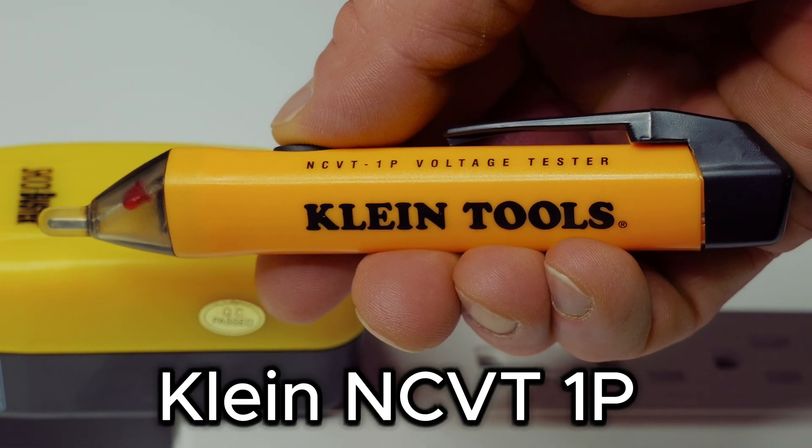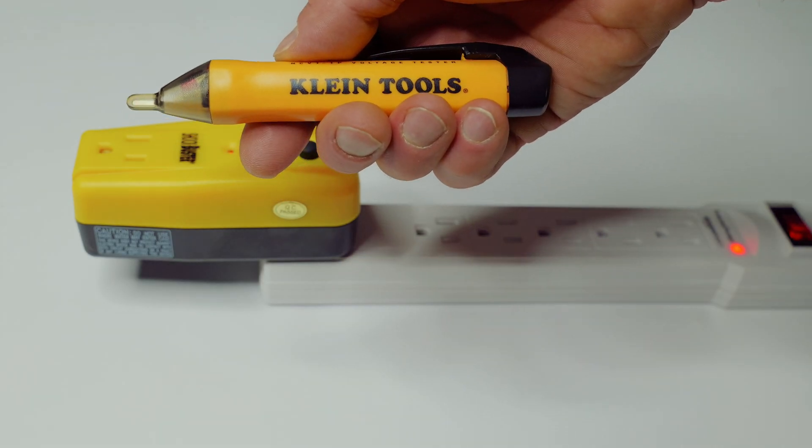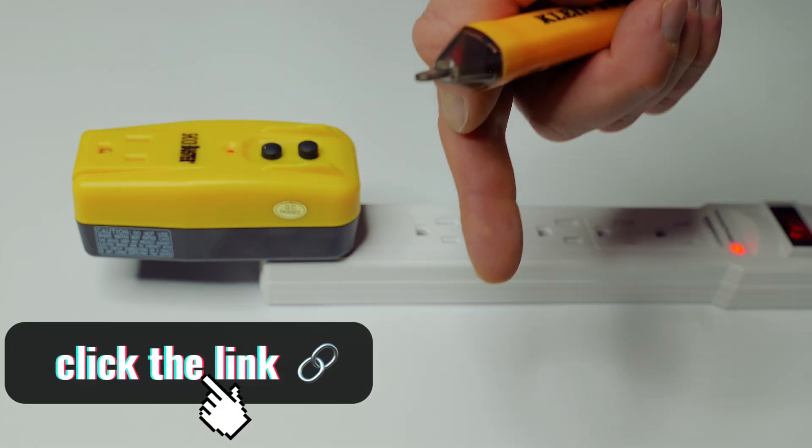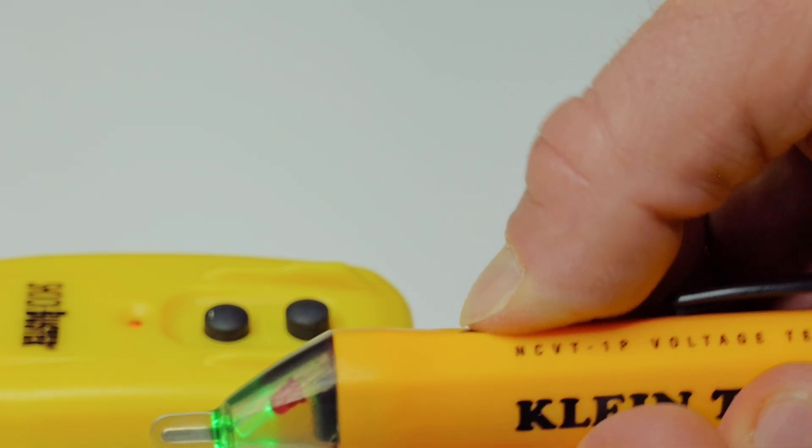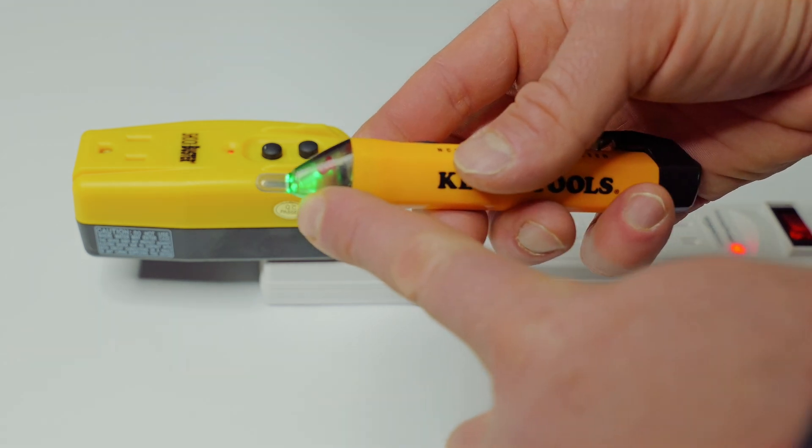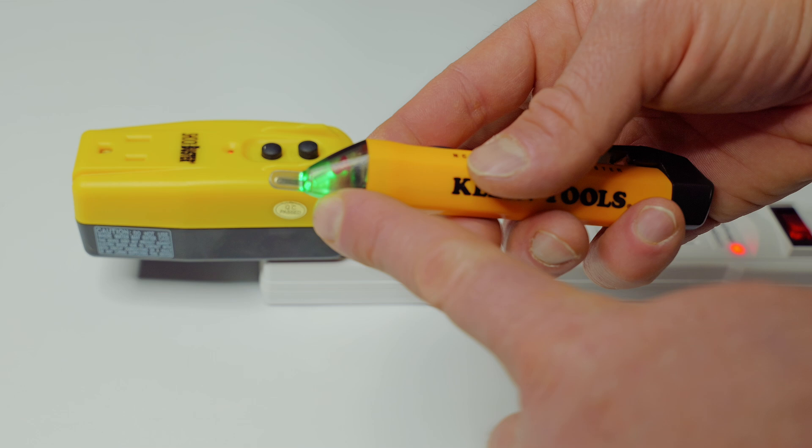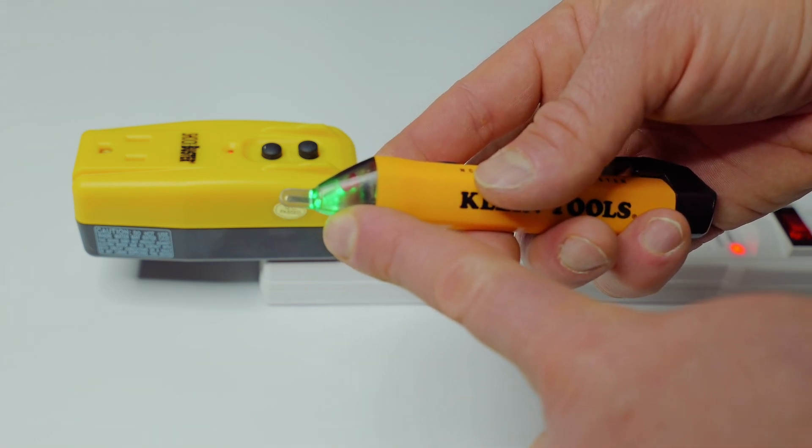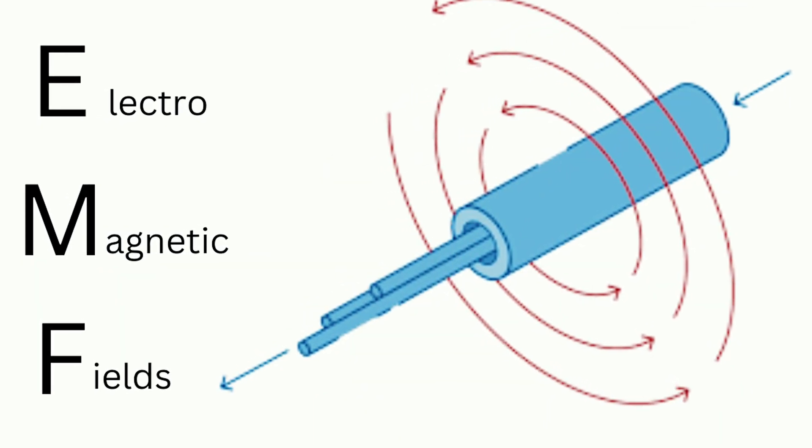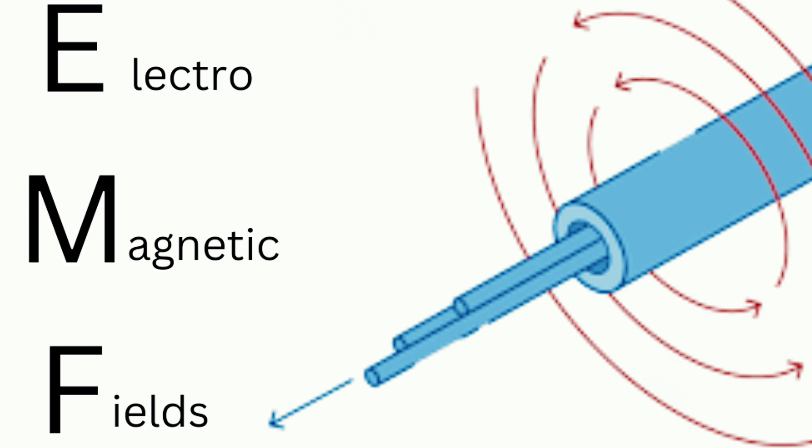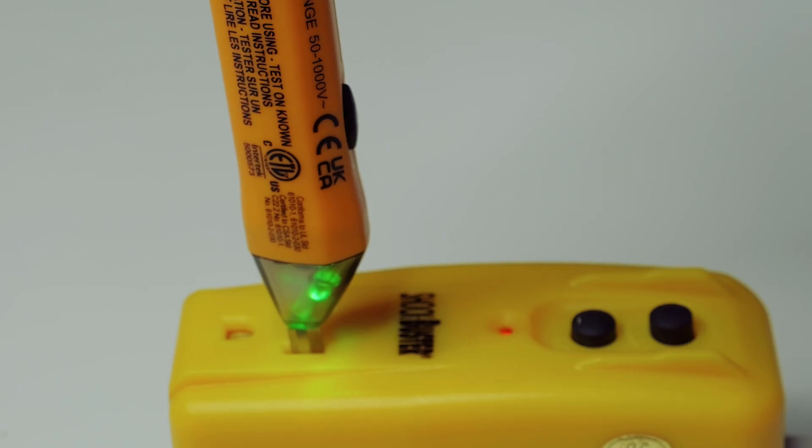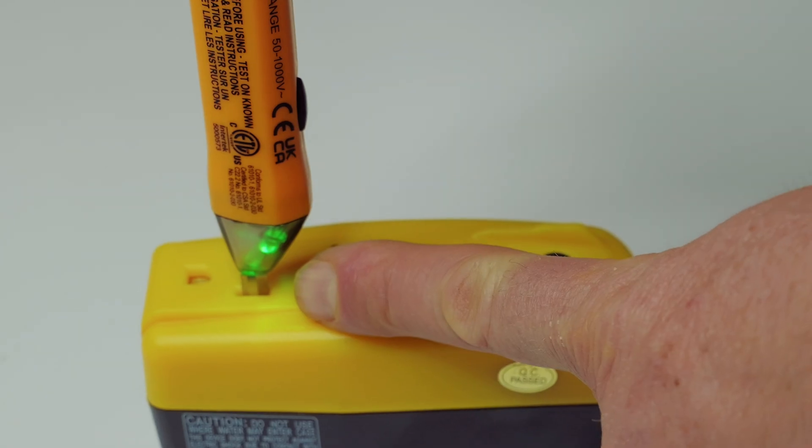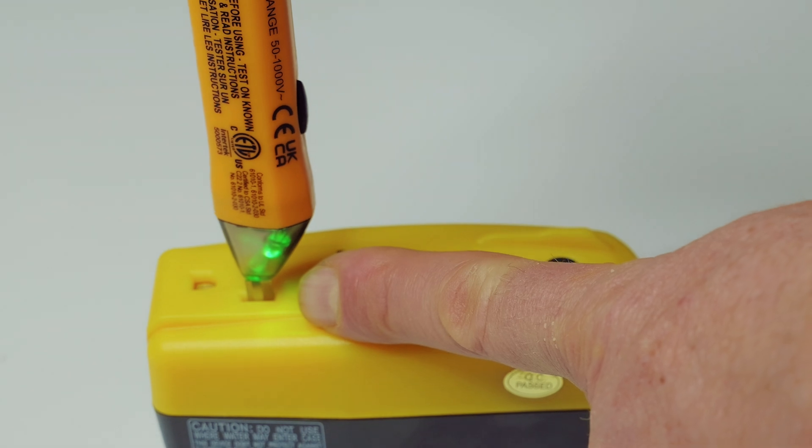Next up is the Klein Tools NCVT 1P. Now this is on Amazon most times for under $25. I'll throw links to all these in the description. So with that said, let's go ahead and test the Klein Tools. Hold down the power button. You can see now that I have a solid green light. That tells me that I'm not near or near enough to any kind of voltage or power source. Now remember these work on EMF power, that's the electromagnetic force that is near an energized circuit. So I'll go ahead and test the neutral side of my socket buster and it's still green. That means that I have no power. So go ahead and insert it into the hot side. As you can see it is still green.